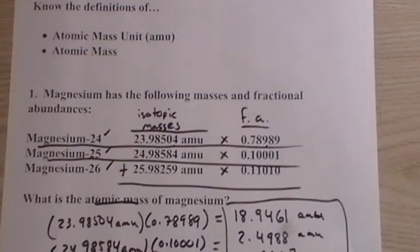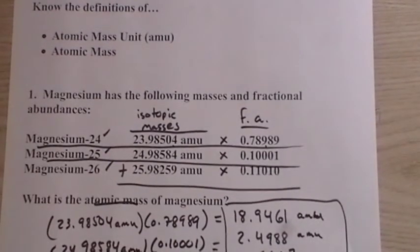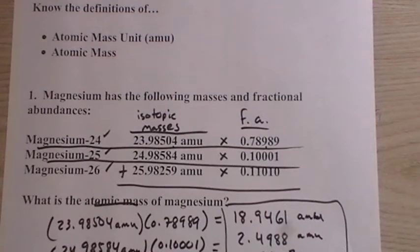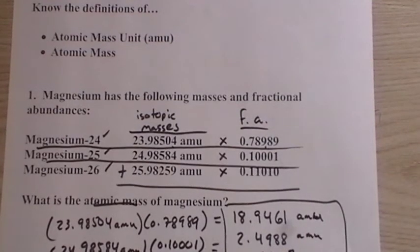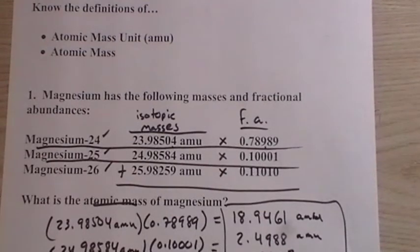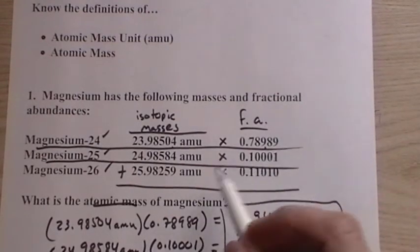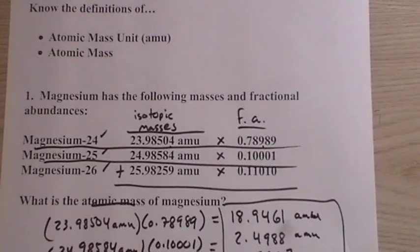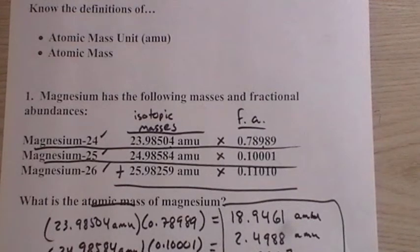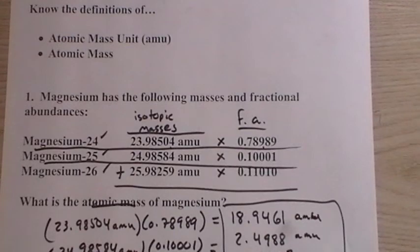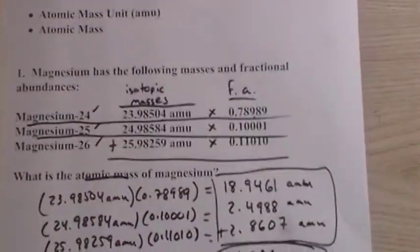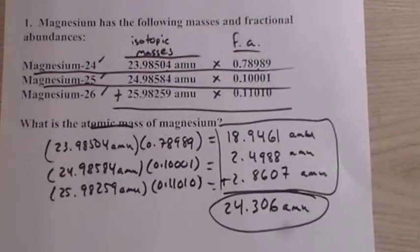Now, from the periodic table, your periodic table, well, in the book it's 24.305. Oh, and this is 24.306. Very close. But on the exam, I'm free to give any fractional abundances, any masses, because I'm going to say it's from an extraterrestrial source. So don't count on being able to even check it against the periodic table.